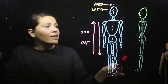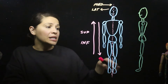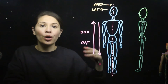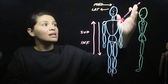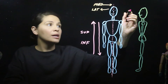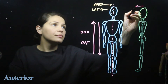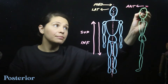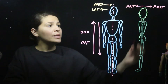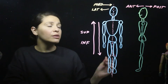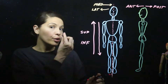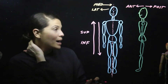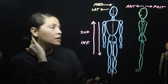I've drawn a side view of an individual to demonstrate anterior and posterior — essentially front and back. Things that are more towards the front side of the body would be termed anterior, and things closer to the backside of the body would be posterior. For example, the nose is anterior to the back of the head, and the back of the head is posterior to the nose.